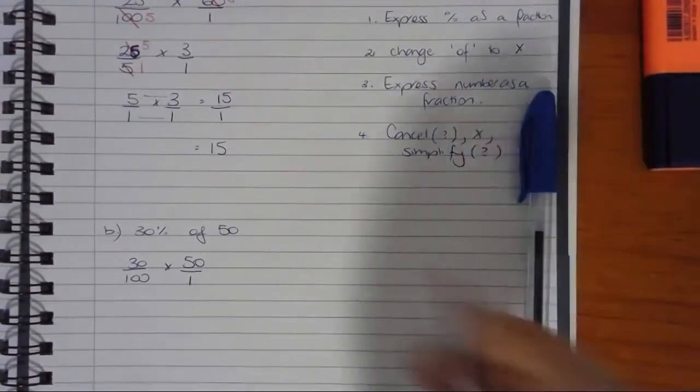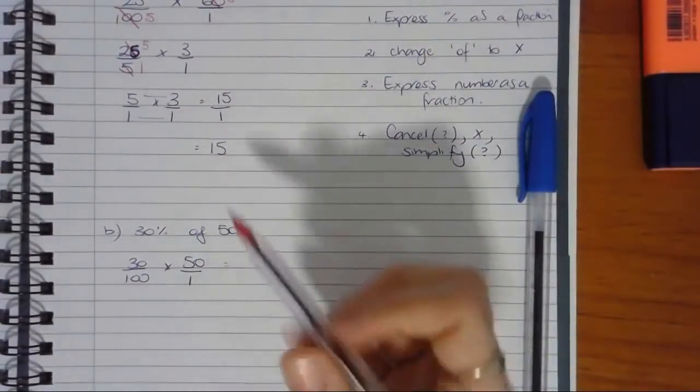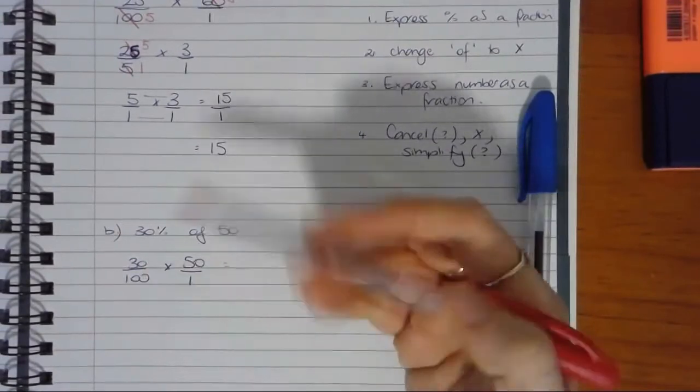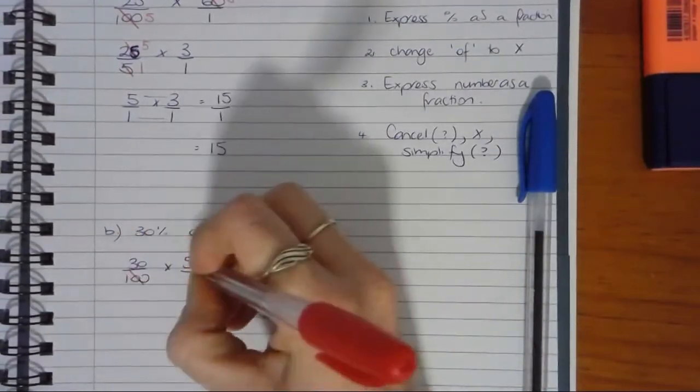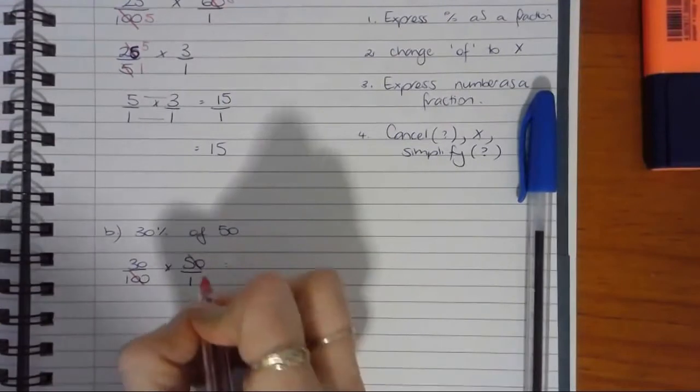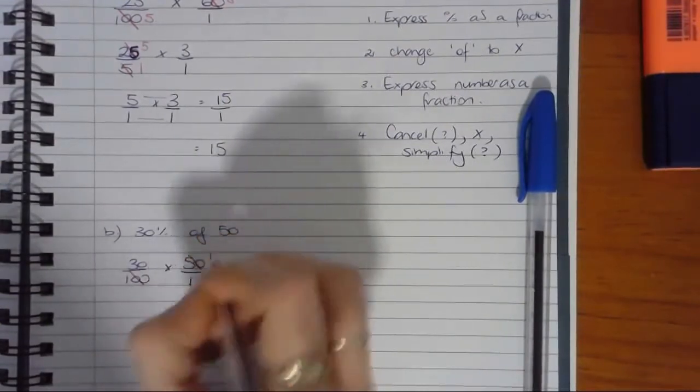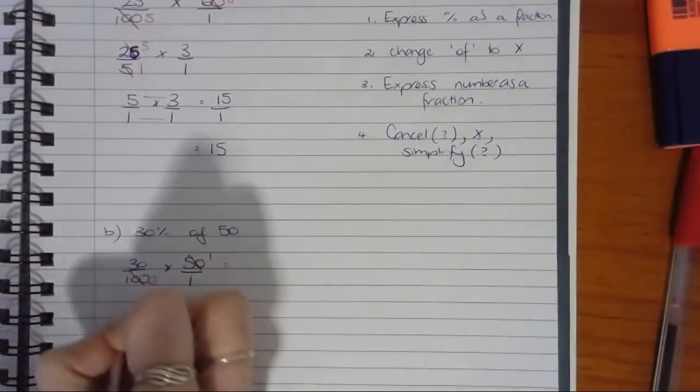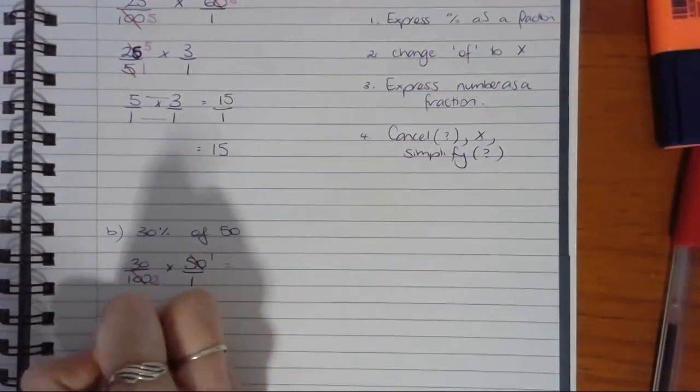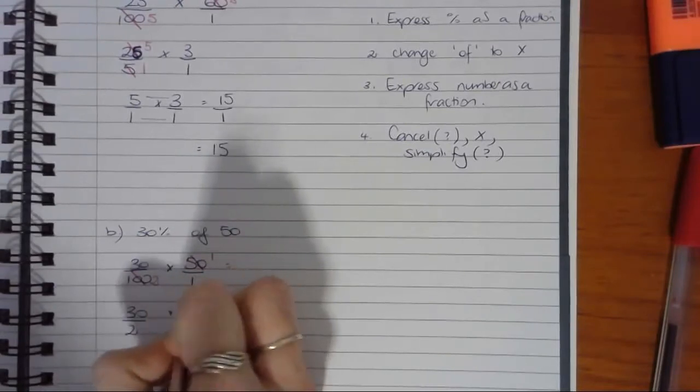Cancel if I can. Again, there's two possible ways to cancel. We could do 30 and 100, or 50 and 100. I'm going to go with this combo. 50 goes into 50 and 100, so that simplifies that right down, which is awesome. 30 over 2 times 1 over 1.